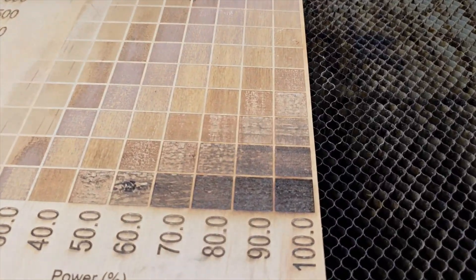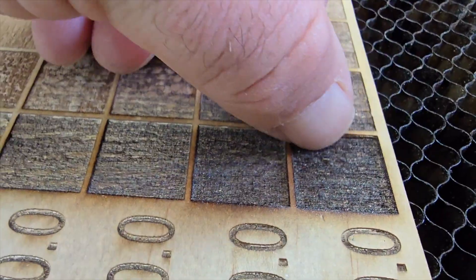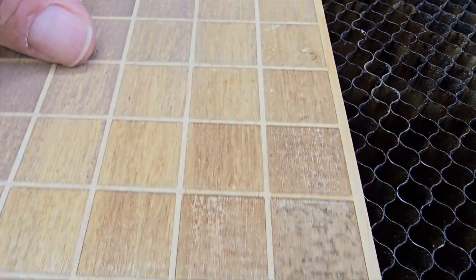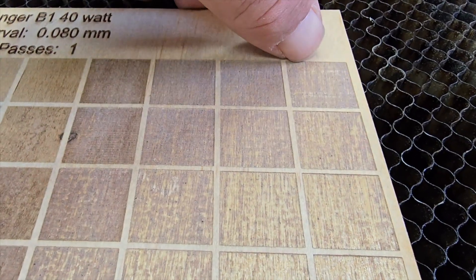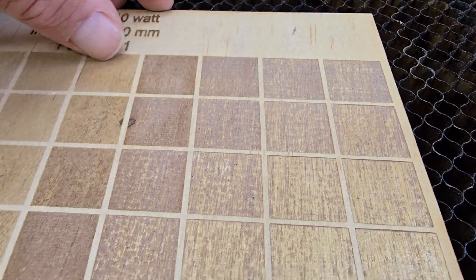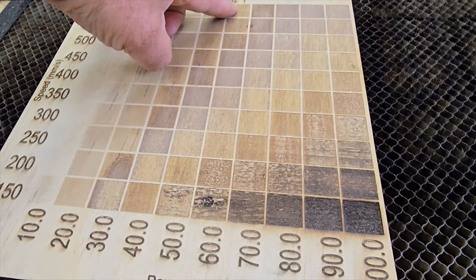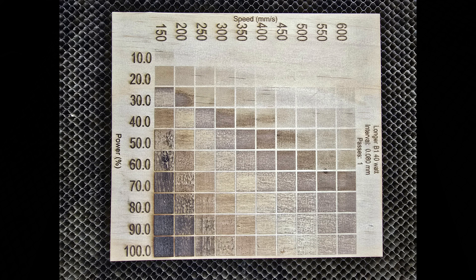The first thing we're going to do is an engrave test. We're running 10 to 100 power and 100 to 600 millimeters a second, which is 36,000 millimeters a minute. You can see how this is indented, cut into the wood when I did an engrave. I blew this up big so you can really see it. We're down to about 60% power at 600 millimeters a second before it is just an engrave on the wood without actually burning an indent into the wood.